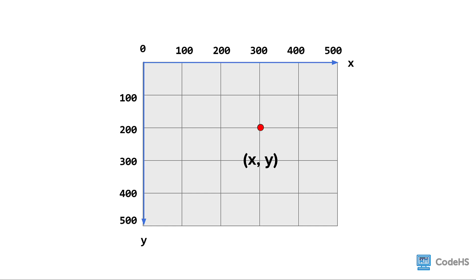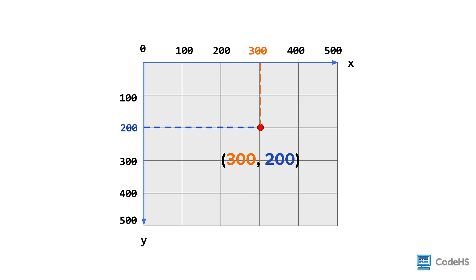A position on the grid is described using x and y-coordinates. For this point, its x-coordinate is 300 because it is 300 pixels to the right of the origin. The point's y-coordinate is 200 because it is 200 pixels down from the origin. Therefore, the x and y-coordinates for the point are 300 and 200.